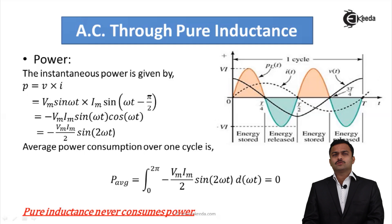Now let us come to the power. Instantaneous power for this circuit is instantaneous voltage multiplied by instantaneous current. So instantaneous voltage is Vm sin ωt and instantaneous current I am getting Im sin(ωt - π/2).